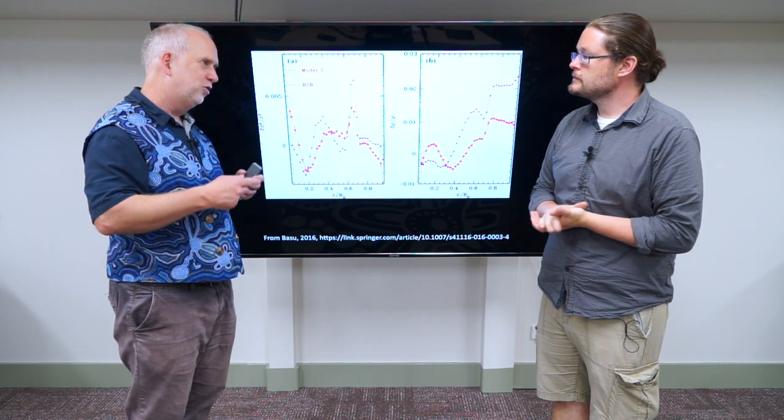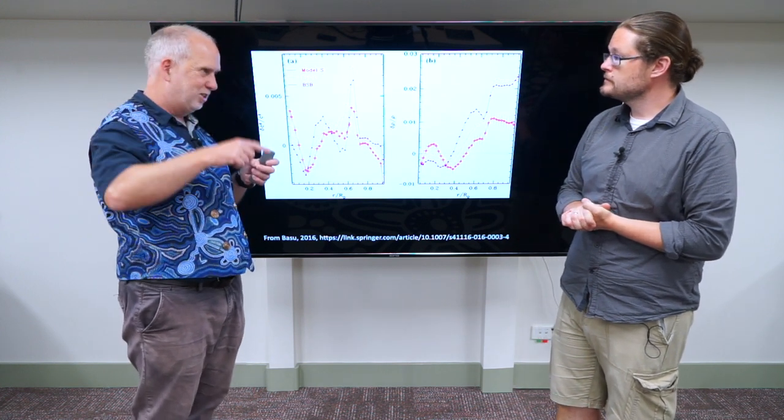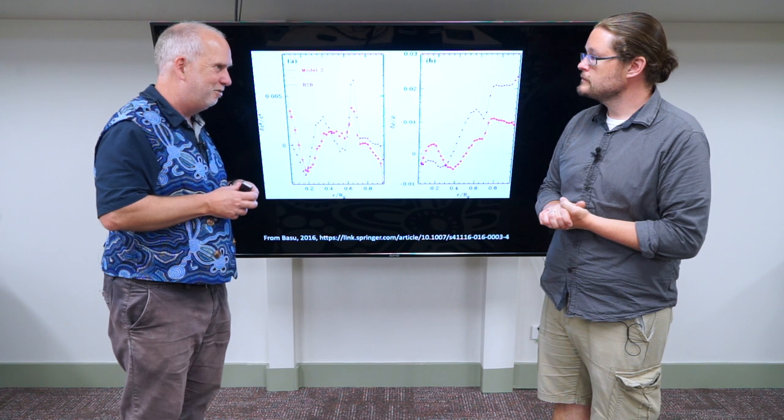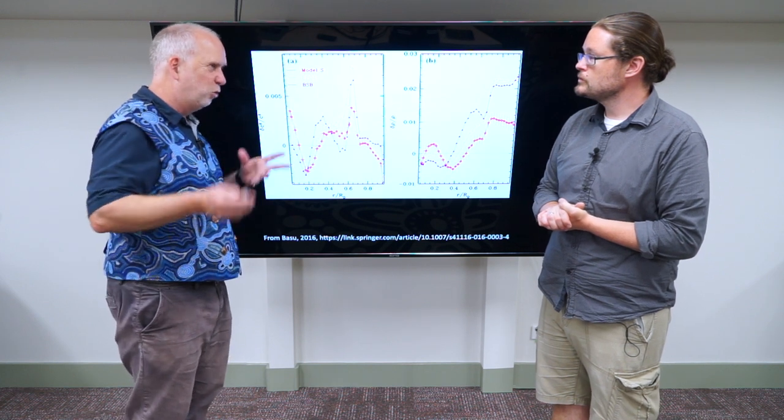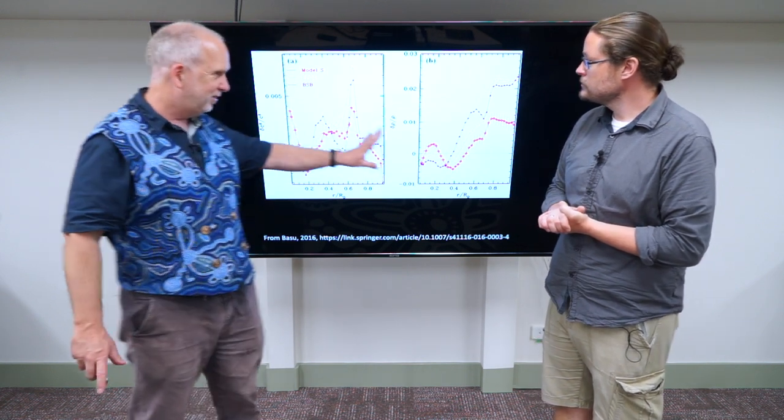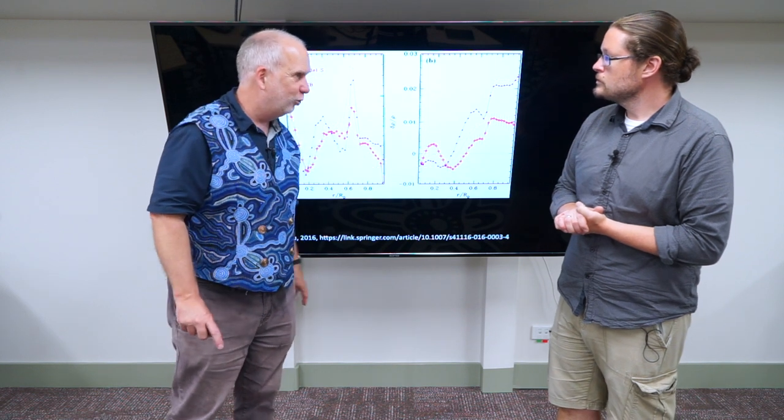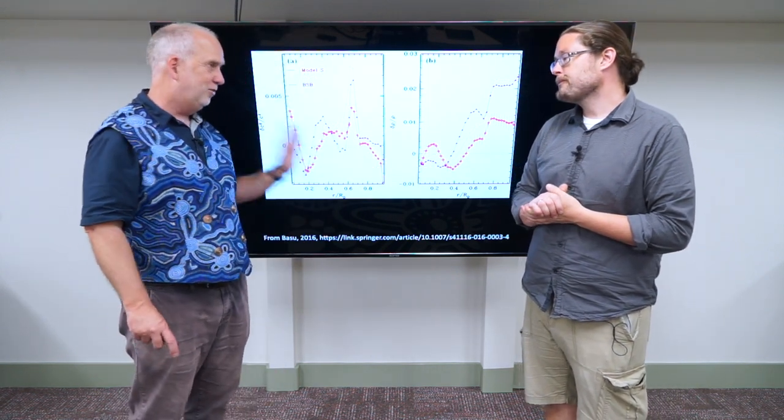Also, the convection tends to overshoot a bit. Instead of staying nice within its convective zone, sometimes it pops up a bit below and above. And there are all sorts of these complications that are really hard to model. But nonetheless, it's a spectacularly good agreement within you, a percent or so, throughout the Sun.